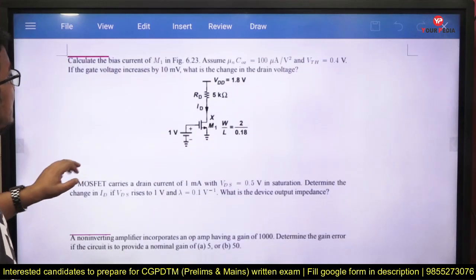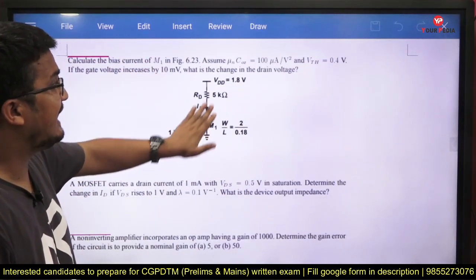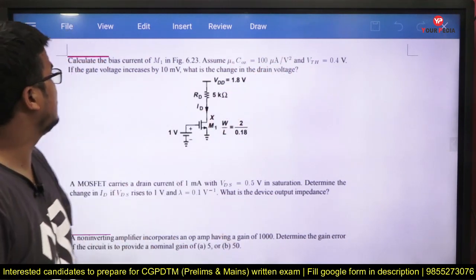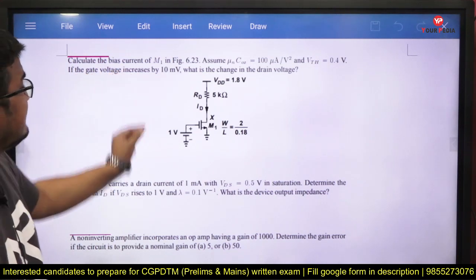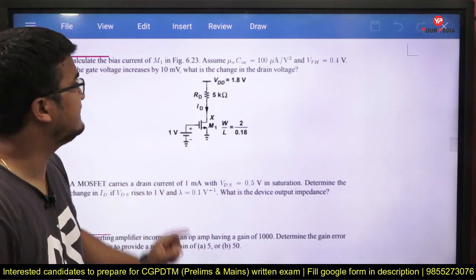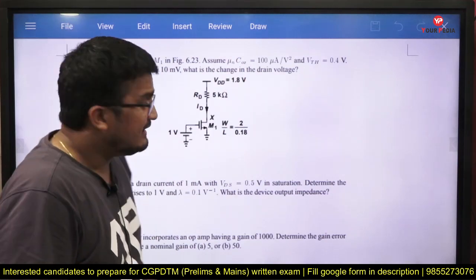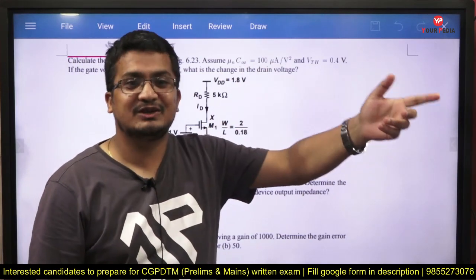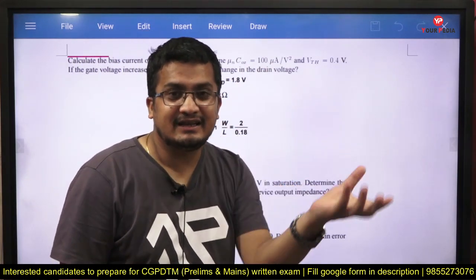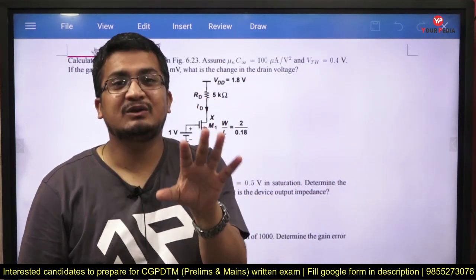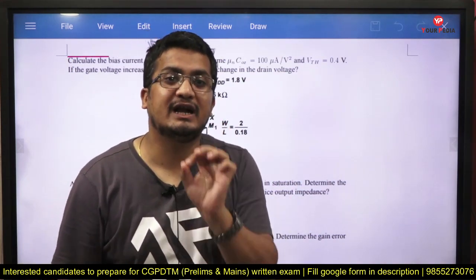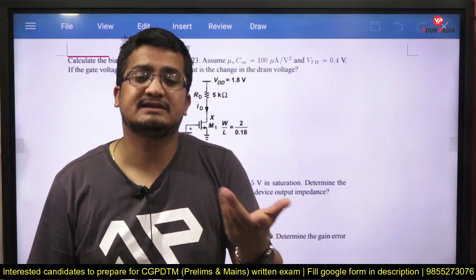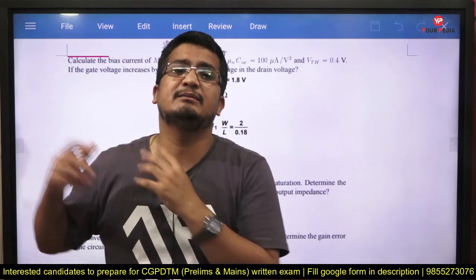Next question: calculate the bias current of M1, assuming µnCox equal to 100 µA/V² and Vth equal to 0.4 V. If the gate voltage increases by 10 millivolts, what will be the change in the drain voltage? He is increasing the voltage at the input and asking for the change at the output. After making an assumption, calculating and verifying, check whether the change in output divided by the change in input is greater than 1. If equal to 1, it is a buffer; if greater than 1, it is an amplifier.